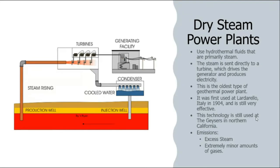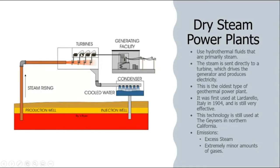In a dry steam power plant, depending upon the depth, steam is available directly under high pressure. That steam is directed to drive the turbines, and the turbines are connected to a generator to produce electricity.